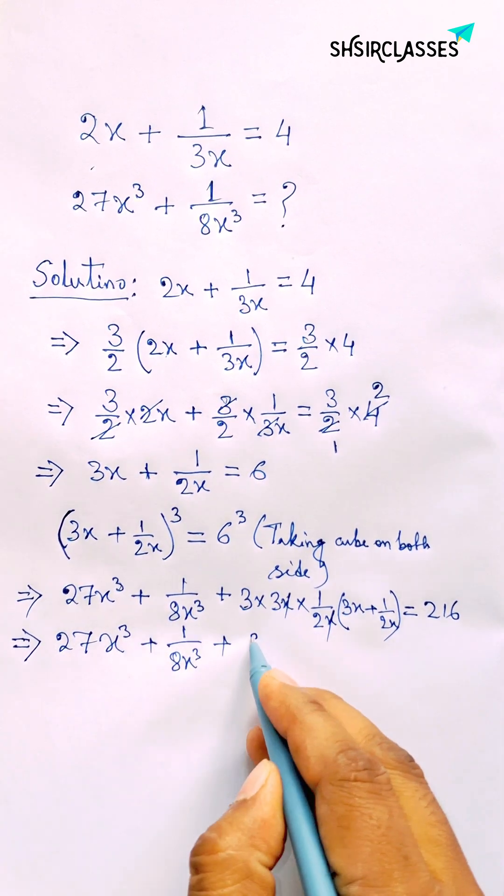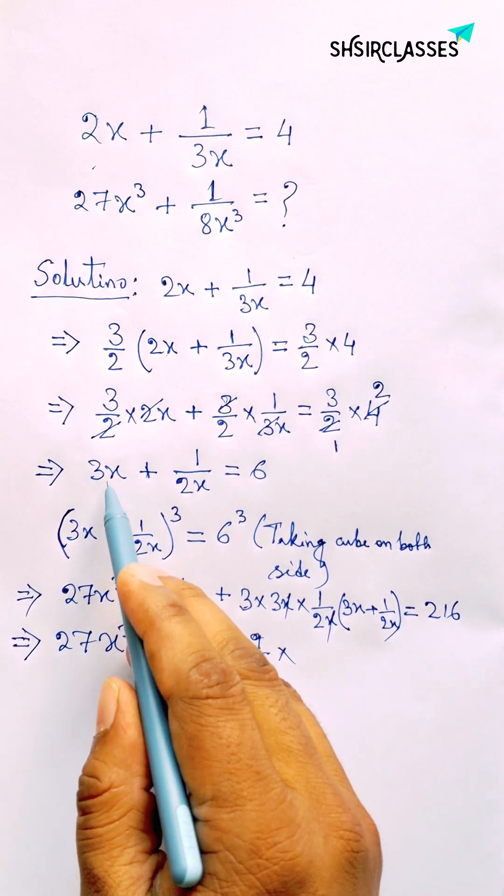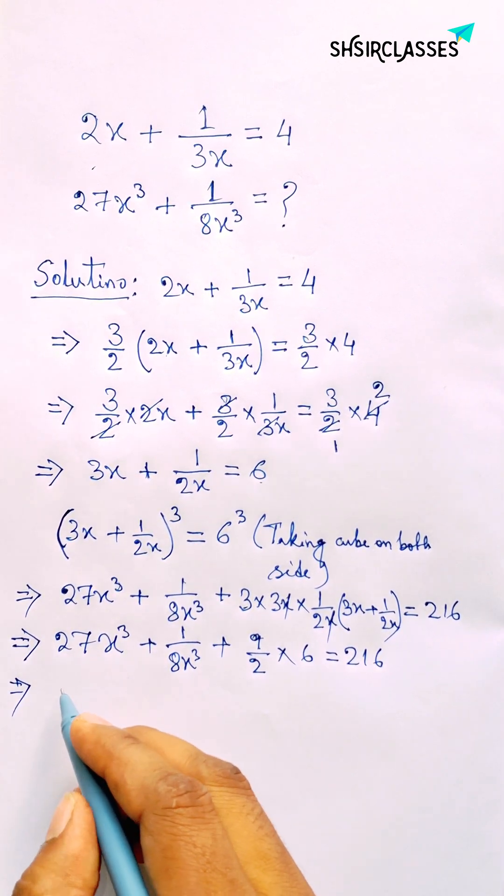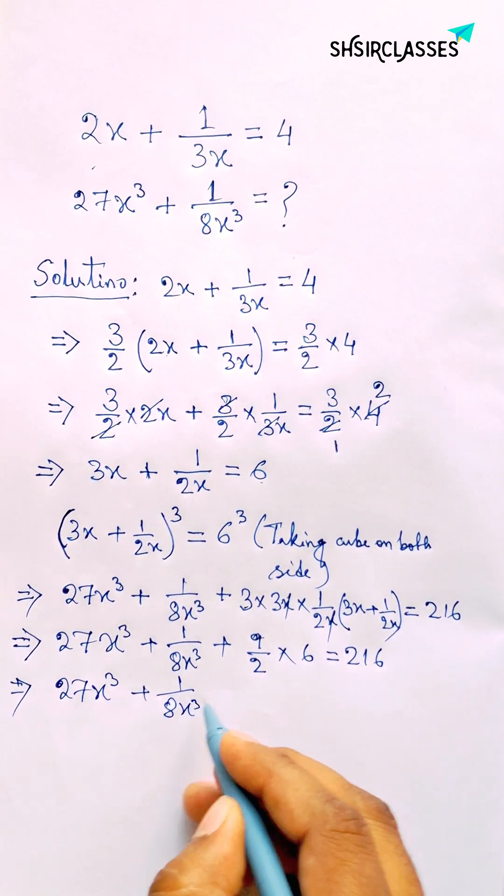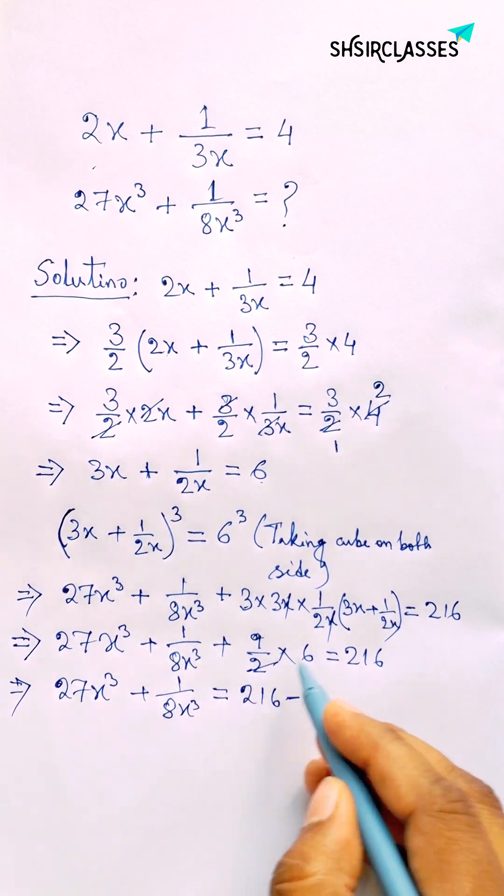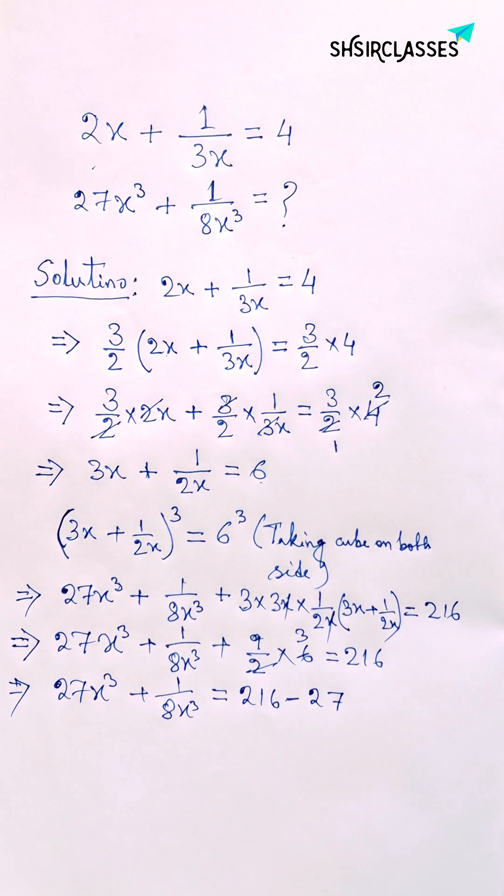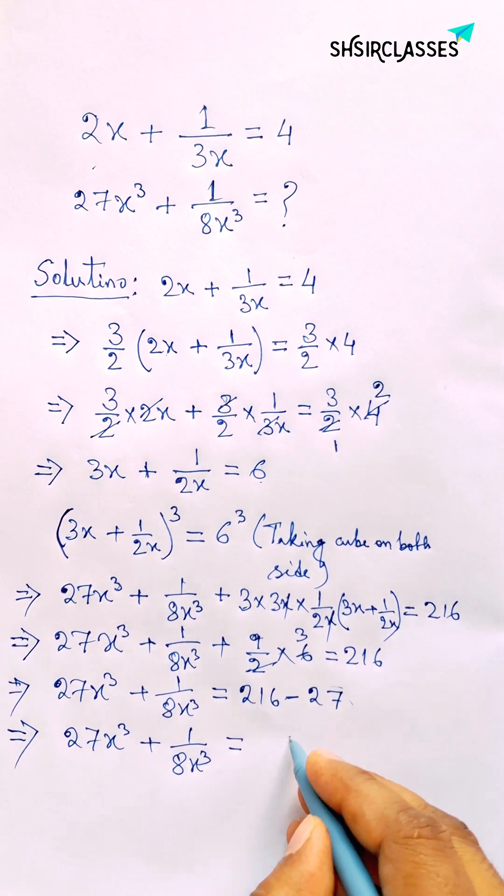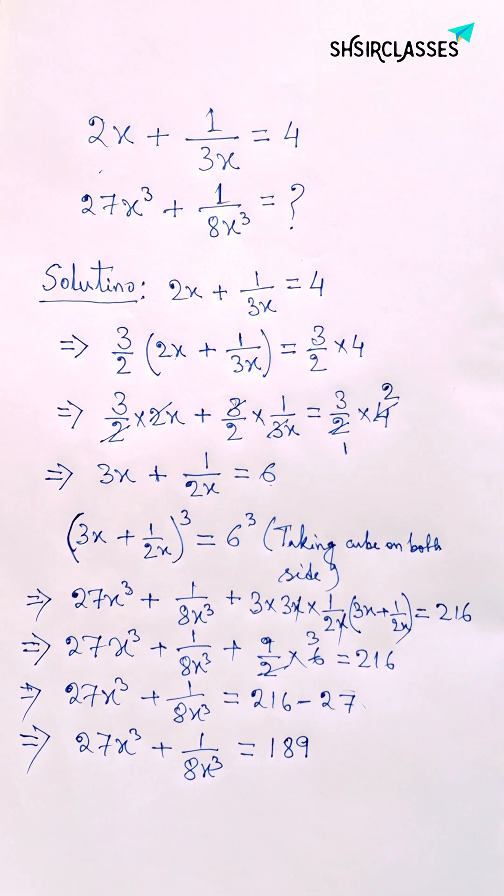Now simplifying this, so here 9 by 2 and putting the value of this, we have 6 and 216. Again simplifying this, so 216 minus 27. Finally we got here 189. That's all.